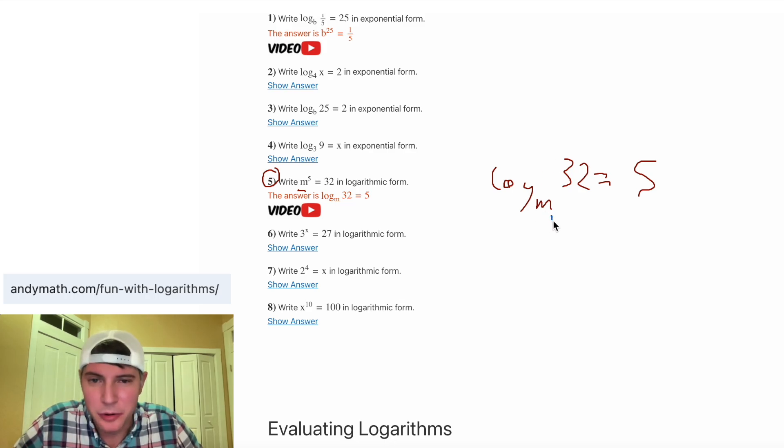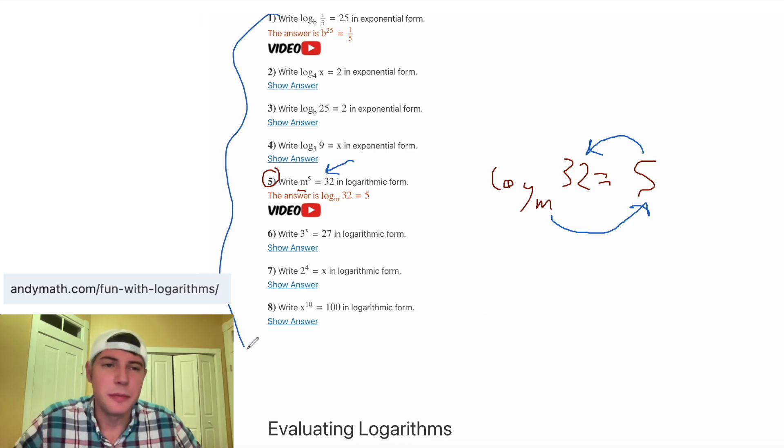And now that we have this, we can check going backwards, m to the 5 equals 32. And that brings us back to this right here. So now there's eight of these that people can try out.